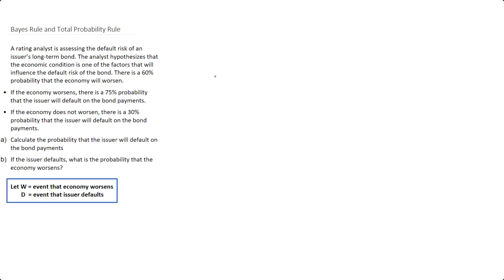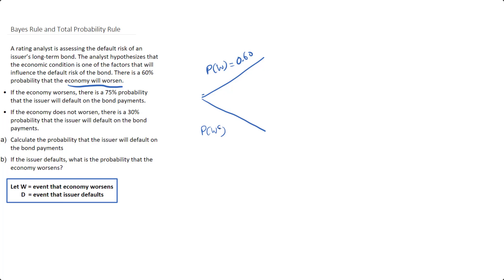Now we'll start to draw the tree diagram, starting from the probability that the economy will worsen. The first branch represents the economy worsening, with probability W = 0.6, or 60%. The other branch represents the economy not worsening, denoted W complement, with probability 1 minus 0.6, which is 0.4.